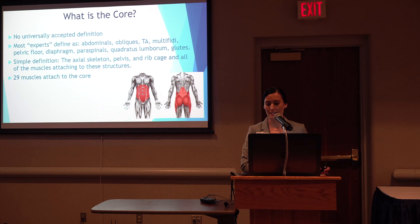Starting with the lumbar spine, we have the transversospinalis group, which is made up of the rotatoris, interspinalis, intertransversarii, semispinalis, and multifidus. This is the deepest intrinsic muscle layer that provides proprioceptive information to the central nervous system and segmental stabilization.